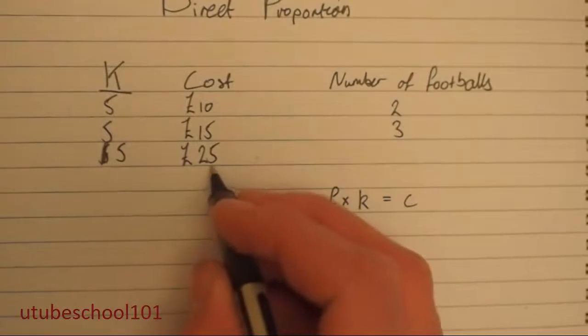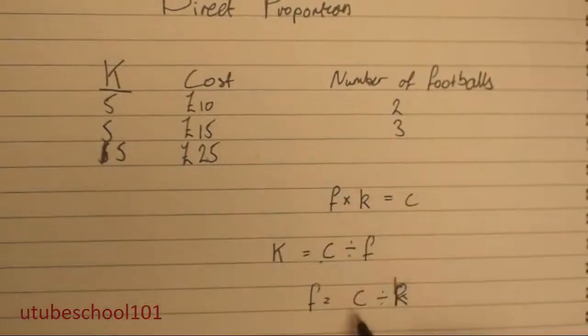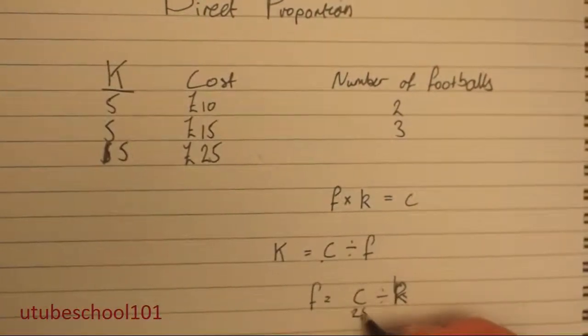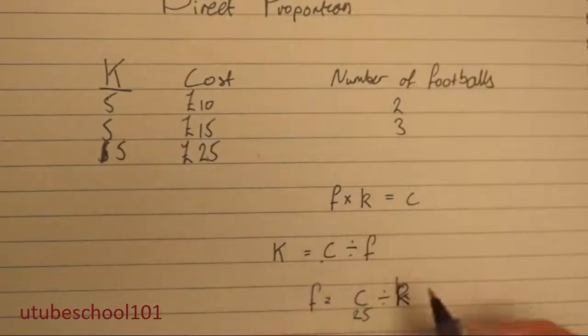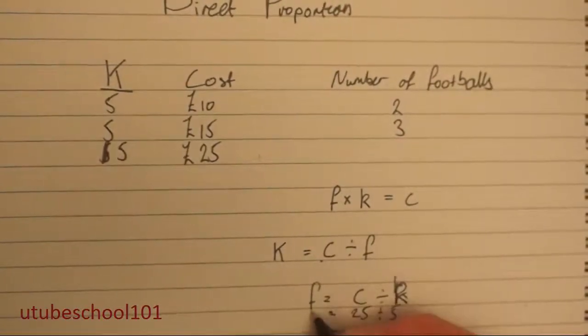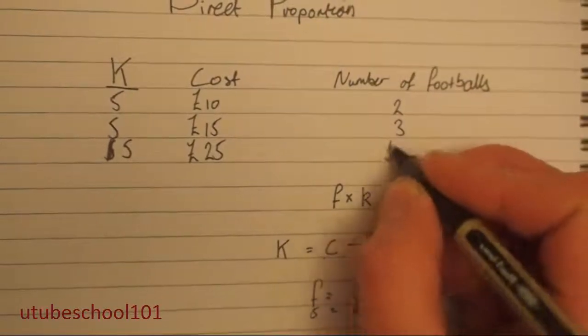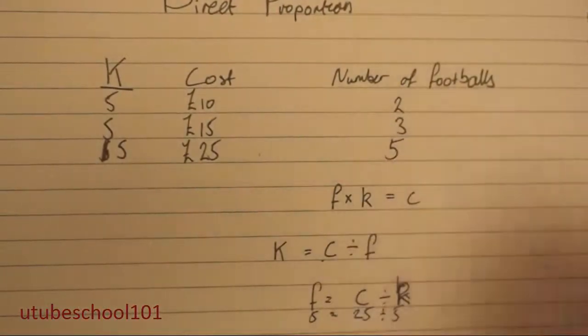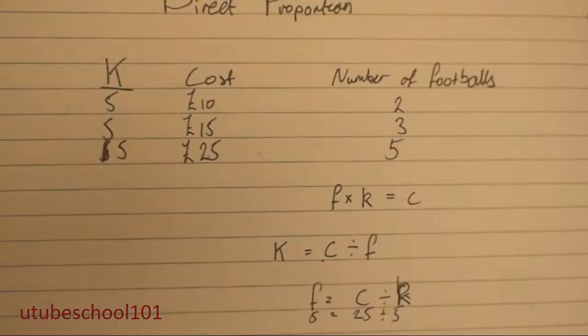So you've got twenty-five pounds here, c. So twenty-five divided by k, which is five, is going to equal five. So the number of footballs we will get for twenty-five pounds is going to be five footballs.